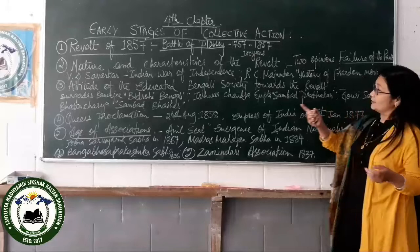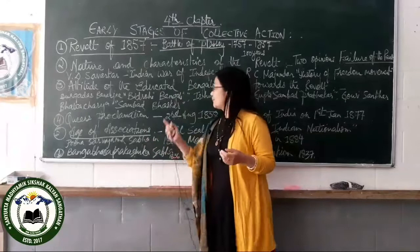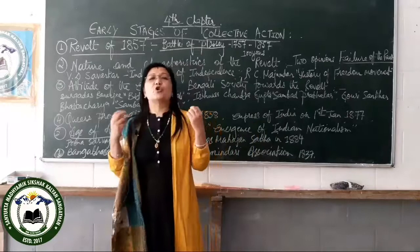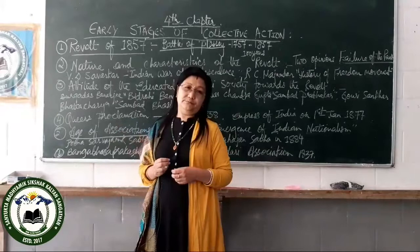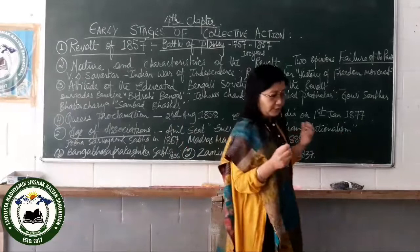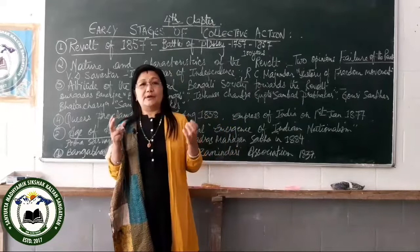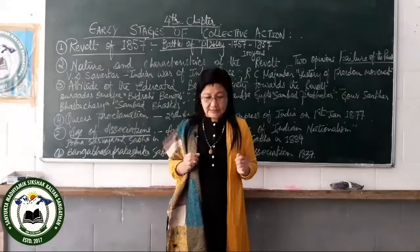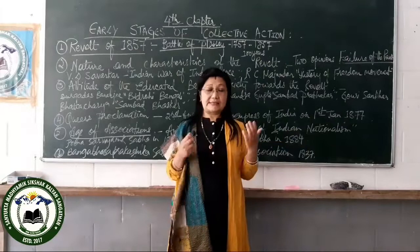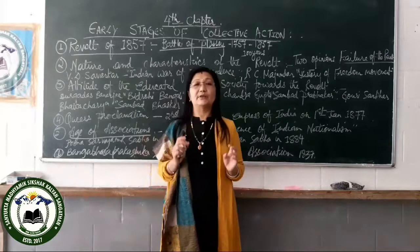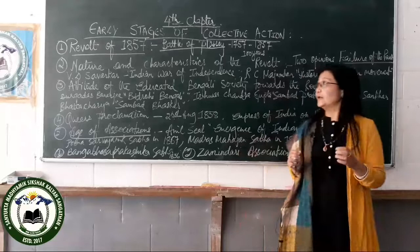Gauri Shankar Bhattacharya, who wrote the journal Sambad Bhaskar, advised people to dance with joy at the failure of the revolt. Another writer, Kali Prasanna Sen, actually prayed for the destruction of the sepoys. As a result, you can see that the middle-class people did not support the Revolt of 1857 — they were apathetic and not sympathetic to it.